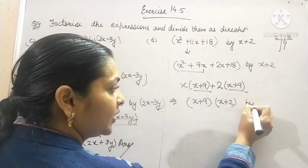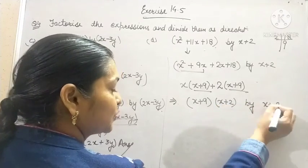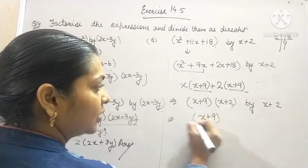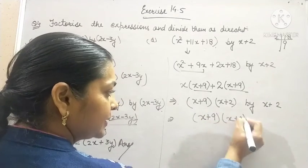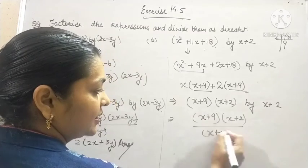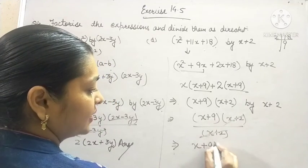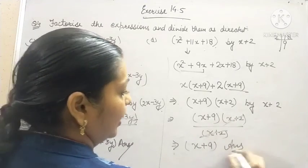And we need to divide it by x plus 2. So, the final answer will be x plus 9. Cancel the factor x plus 2. We will obtain x plus 9 as our answer.